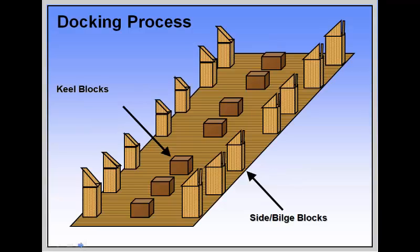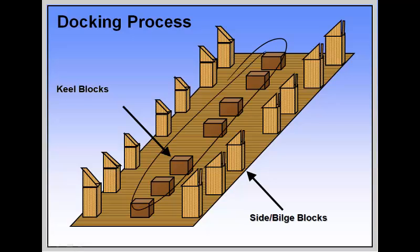Looking at the actual docking process, we have two distinct types of blocks. Keel blocks in the middle touch first and support about 90% of the vessel's weight. The bilge or side blocks out to the side are pushed way out when the vessel comes in, and will be hauled in to make contact with the vessel once she's resting on the keel blocks. The point at which we haul the side blocks in depends on when we reach critical draft, and we need to calculate that to ensure we do it before then.